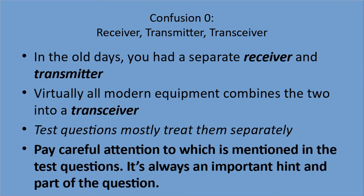The first confusion: receiver, transmitter, and transceiver. In the old days you had a separate receiver and transmitter, and each of them took two people to carry — they were as big as the biggest PC you've ever seen, had vacuum tubes, and were just enormous. Now pretty much all modern equipment combines the two into a transceiver. So even a handheld walkie-talkie transmits and receives, so it's a transceiver. The test questions mostly treat them separately, so you need to watch for which term is used — receiver or transceiver — because that tells you whether you're dealing with signals coming in or sending signals out.